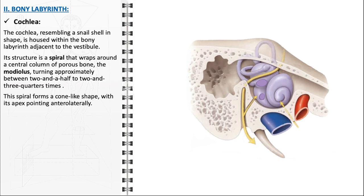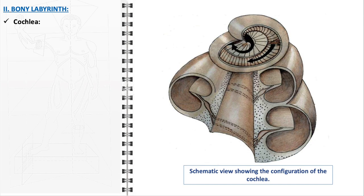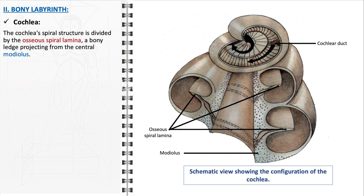The cochlea spiral houses the organ of Corti, the sensory organ of hearing. Each turn of the cochlea is responsible for detecting different frequencies of sound — higher frequencies are detected at the base of the cochlea near the oval window, while lower frequencies are detected at the apex. This gradation in frequency detection allows for the perception of a wide range of sound frequencies. The cochlea is intricately divided by the osseous spiral lamina, a bony ledge that projects from the modiolus, instrumental in creating the unique architecture of the cochlea and facilitating its function in sound transmission.